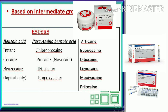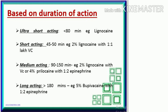Based on duration of action: ultra-short acting (80 minutes), e.g., lignocaine plain; short acting (45–50 minutes), e.g., 2% lignocaine with 1:100,000 vasoconstrictor; medium acting (90–150 minutes), e.g., 2% lignocaine with vasoconstrictor or 4% prilocaine with 1:200,000 epinephrine; long acting (180 minutes), e.g., 0.5% bupivacaine with 1:200,000 epinephrine.